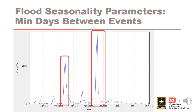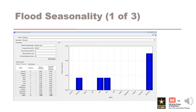Remember, there is some engineering judgment involved in the process. Now that we enter the 20 minimum days between events and hit compute, we see that we returned only six flood events. This is too small of a sample. I think we should take a closer look at the threshold flood and reduce it. I'm going to split the difference between the two and five-year flows. Let's try 30,000 CFS.